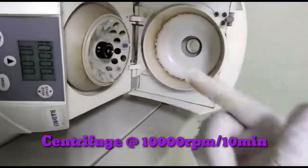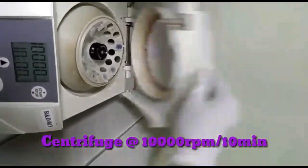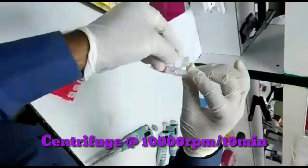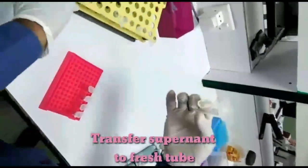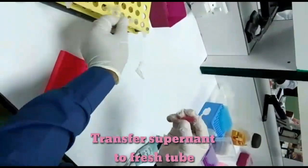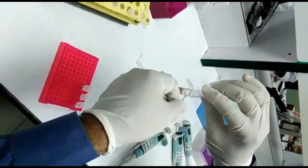Centrifuge at 10,000 rpm for 10 minutes. After centrifuge, transfer the supernatant in a fresh new sterilized tube.